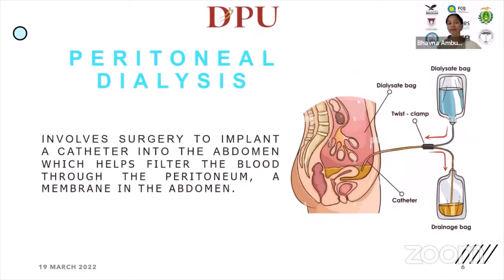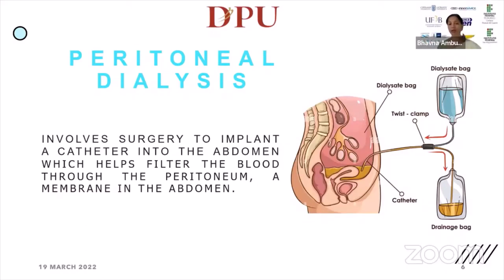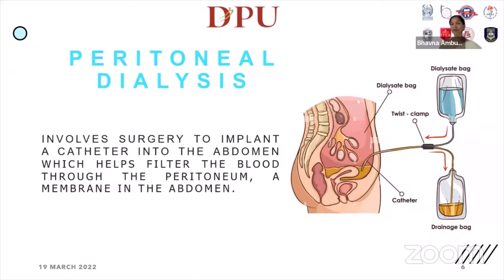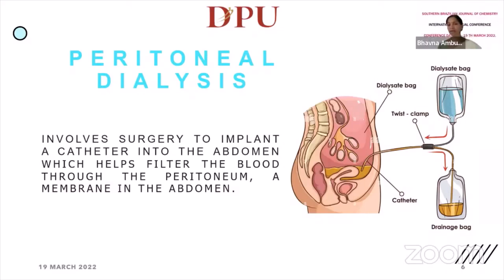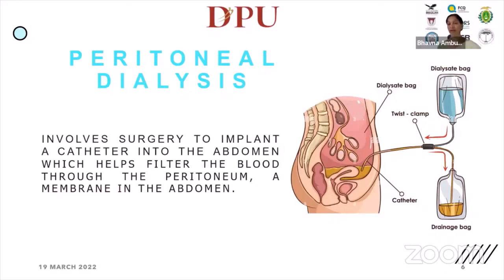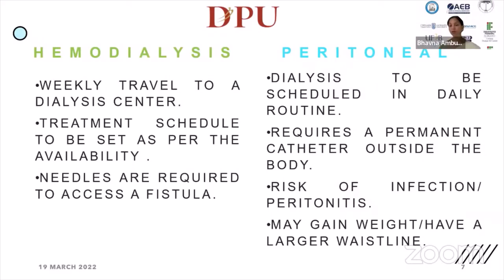The second type is peritoneal dialysis, which is a different approach. It involves surgery to implant a catheter into the abdomen, which helps filter the blood through the peritoneum — a membrane in the abdomen. In this case, blood is not fully removed from the body; instead, a catheter is placed inside the body and made a permanent part of it.